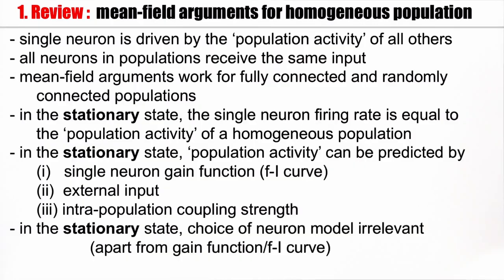What we have seen last week is that a single neuron embedded in a homogeneous population is driven by the population activity of all the other neurons in that population. Importantly, all neurons in a homogeneous population receive the same input. And these mean field arguments work for fully connected and randomly connected populations. Now, all of this works for time-dependent input, time-dependent activity. Now, if in addition we know that we are in a stationary state, then the single neuron firing rate is equal to the population activity. And in the stationary state, the population activity can be predicted by the single neuron gain function, also called the f-I curve, the external input and the inter-population coupling strength.